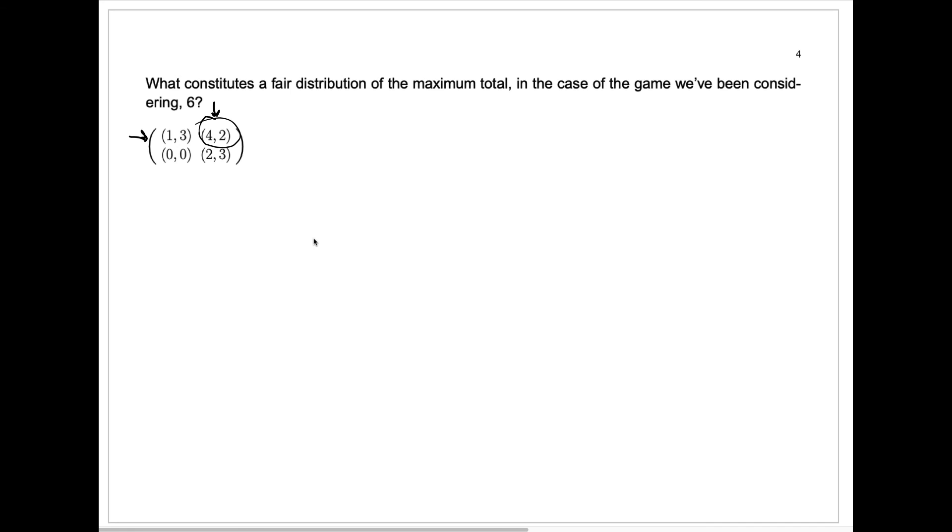Player two could make the following threat. Player two could say, I don't like getting only two when you get four. You should give me a side payment. And if you don't give me a side payment, I threaten to play column one. What happens to you if I play column one? Well, you could go ahead and choose row two, which would be silly. You'd get nothing that way. That would be horrible for you. Or you could choose row one. And then at least you'd get one, a payout of one. I would get three. I'm certainly not happy over here getting only two if I could get three by playing column one.